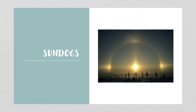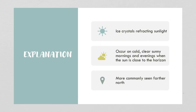Sun dogs are pretty interesting. You often see them in the wintertime because they involve ice particles, but they can be seen other times of the year too, because up in the atmosphere it is colder and there can be ice crystals. In sun dogs, ice crystals are refracting sunlight. This happens on cold, clear, sunny mornings and evenings when the sun is close to the horizon — either rising or setting. They're more commonly seen farther north, but we can see them too if we're observant on a cooler winter day.